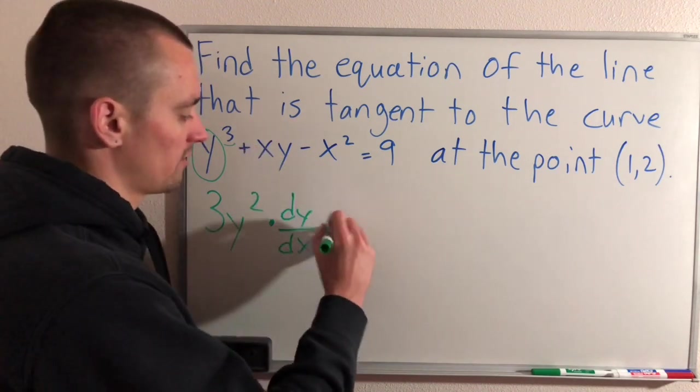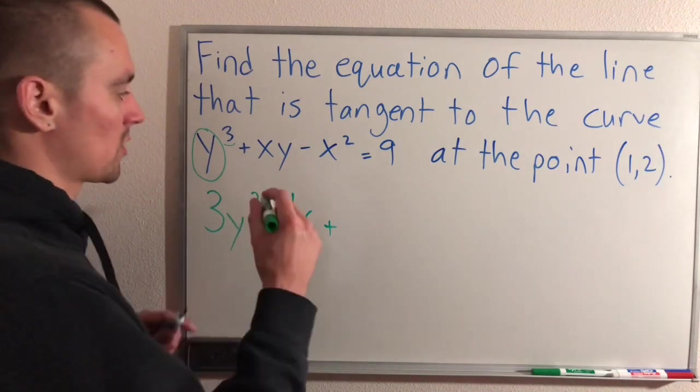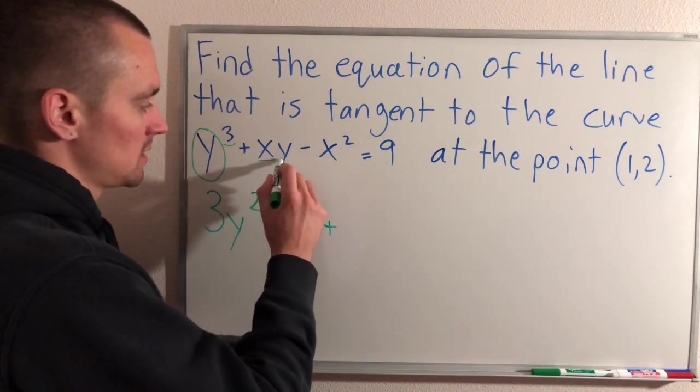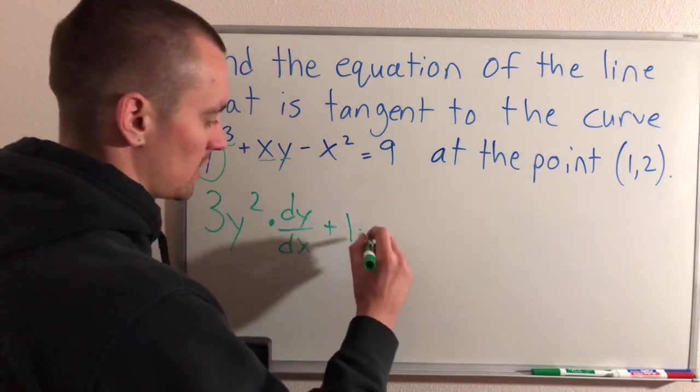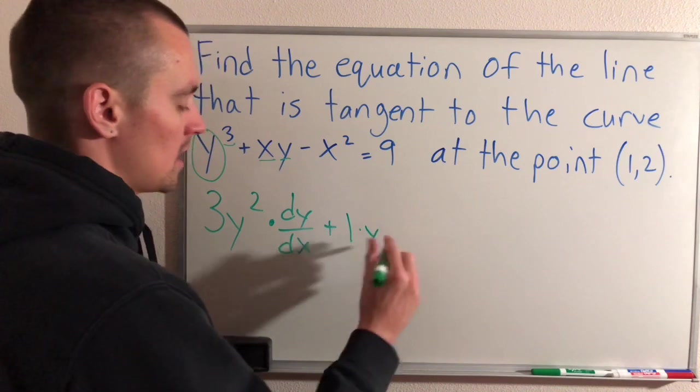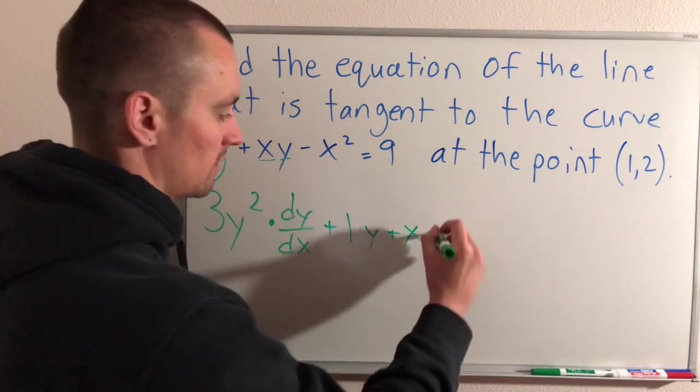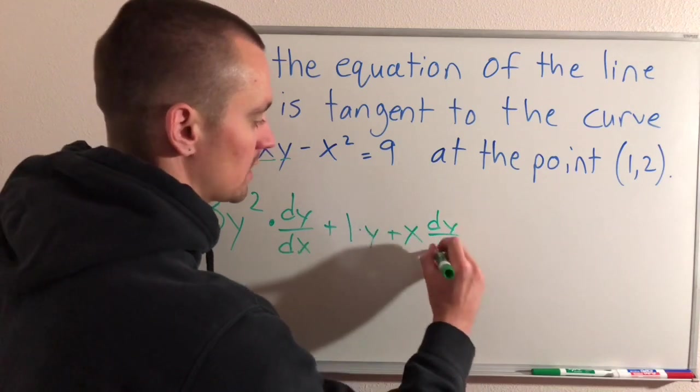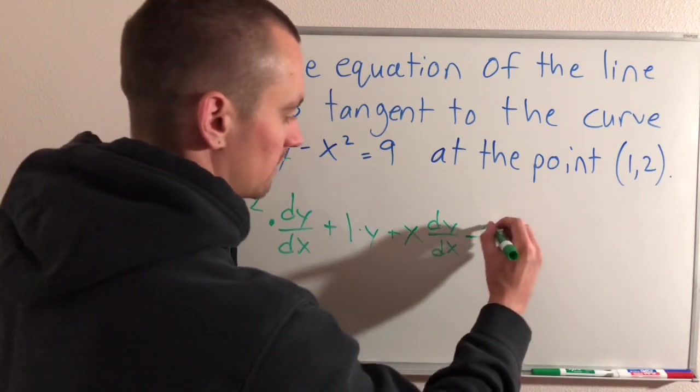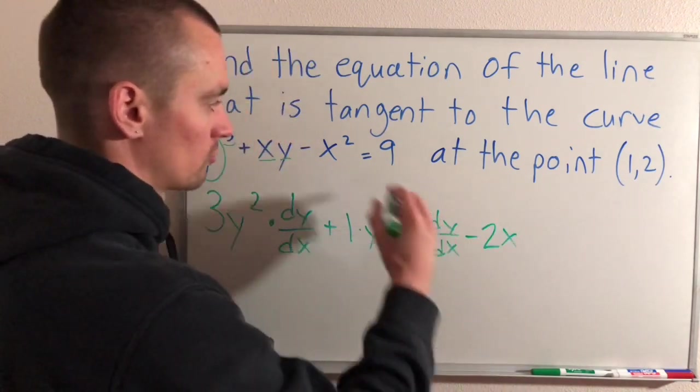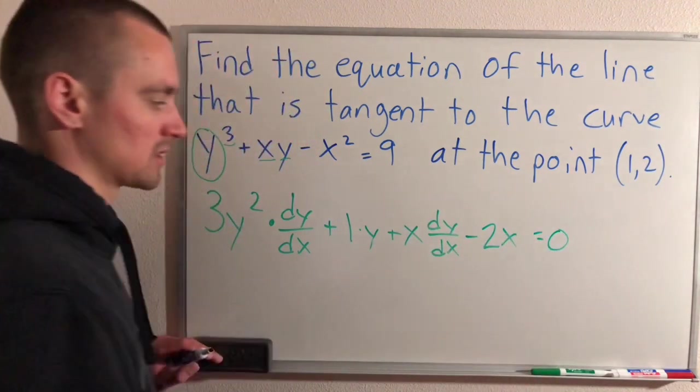Okay, then we're going to have the derivative of xy, which is going to require the use of the product rule. So the product rule says derivative of the first piece times the second. The derivative of x is 1 times y is going to be 1 times y. And then we're going to have plus the first times the derivative of the second. The derivative of y is dy/dx. And then we're going to have minus x². The derivative of that is just going to be 2x by power rule. And then equals the derivative of a constant 9 is just going to be 0.